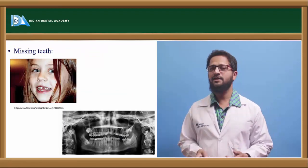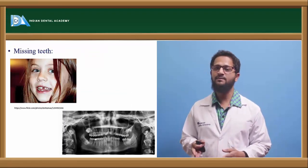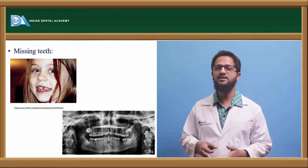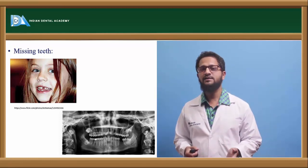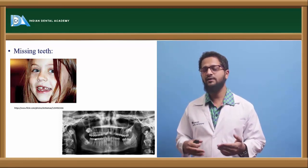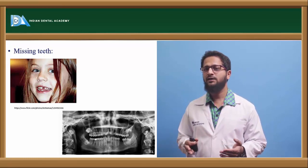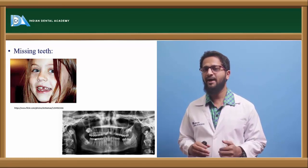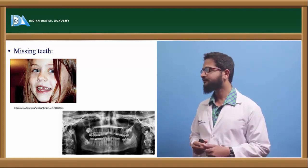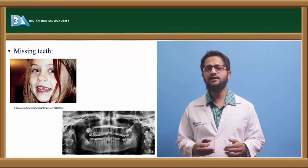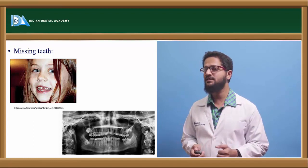Missing teeth is the opposite of supernumerary teeth. Sometimes teeth will be congenitally missing, completely absent, or remain impacted and do not erupt into the oral cavity. Missing teeth usually result in the occurrence of spacing.